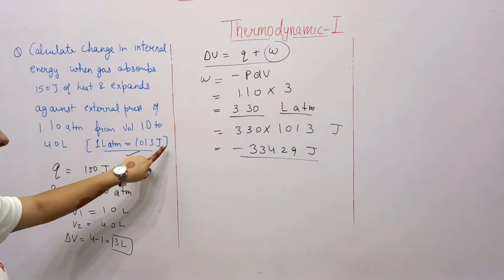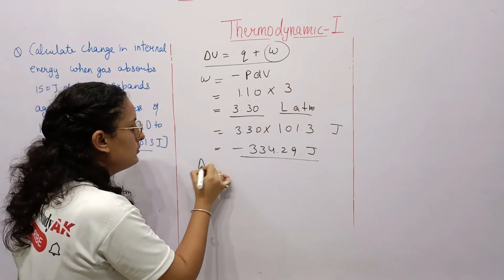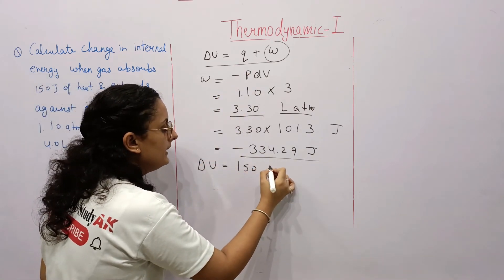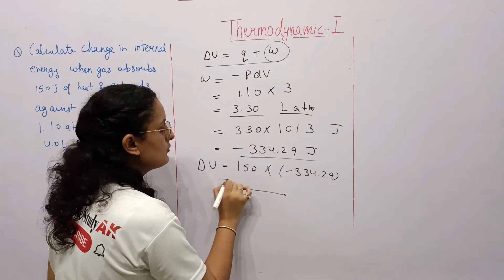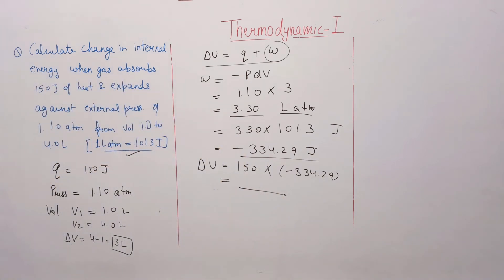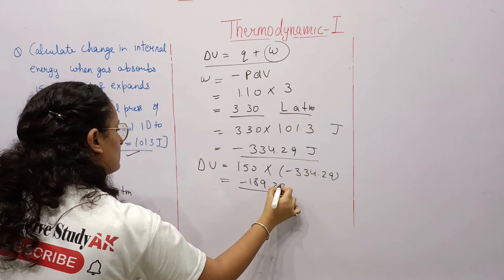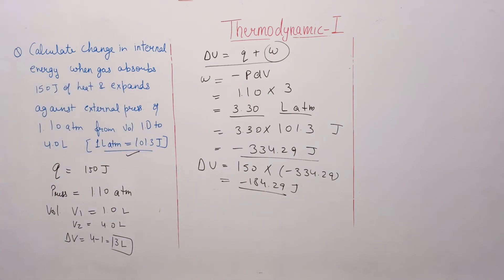Volume is given in liters and pressure in atmospheres, so units are liter·atmosphere — convert to joules using the given conversion. Work done is now found. So delta U = q + W = 150 + (-334.29) = approximately -184.29 joules (about -189.29 joules). Calculate and verify this answer. That was numerical 1.